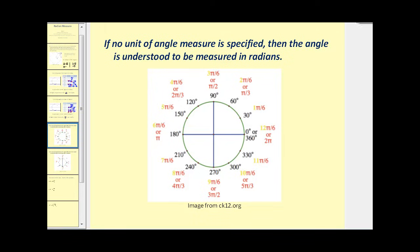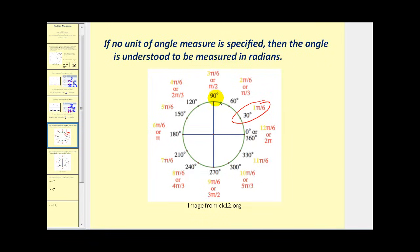When first learning to work with radians, it helps to remember two key angles. The first is that 30 degrees equals pi over six radians. If we have a multiple of 30 degrees, it will be a multiple of pi over six. So 60 degrees is two times pi over six, or two pi over six, which simplifies to pi over three. 90 degrees is three times pi over six, simplifying to pi over two. 120 degrees is four times pi over six, simplifying to two pi over three, and so on.